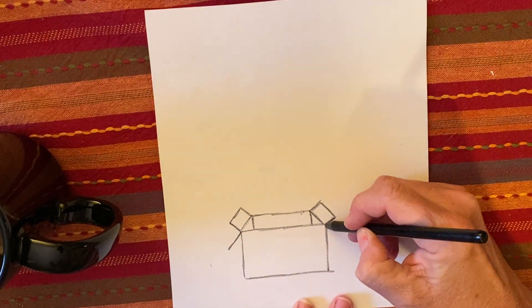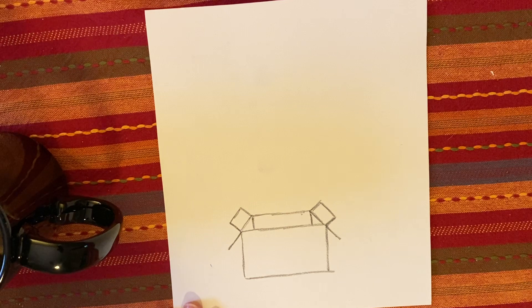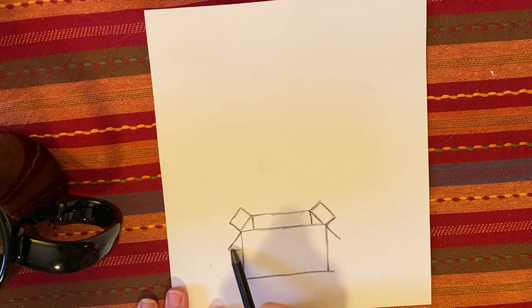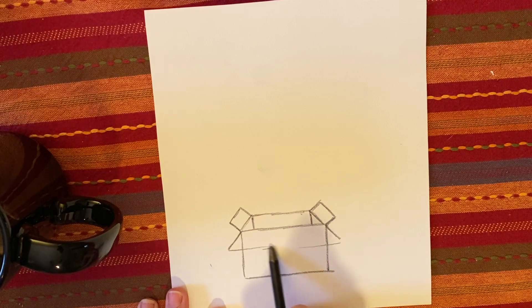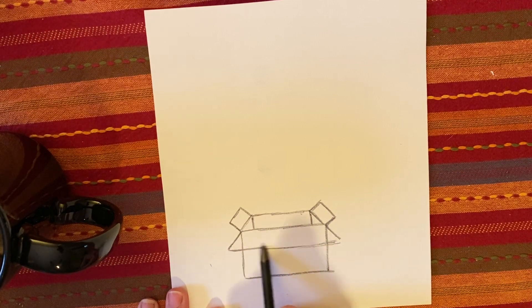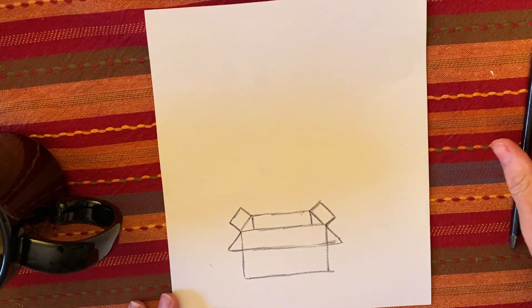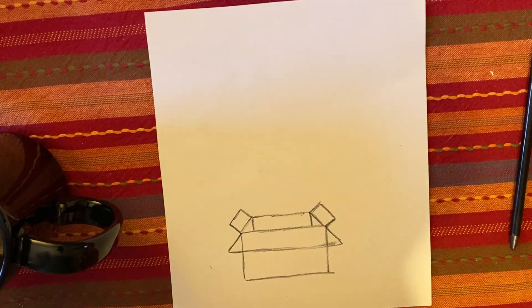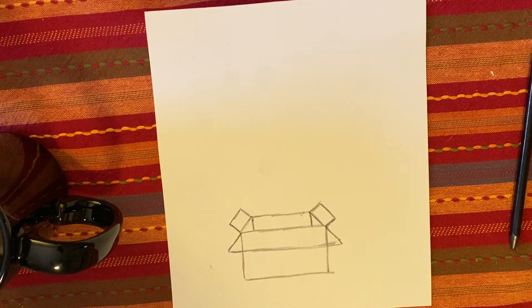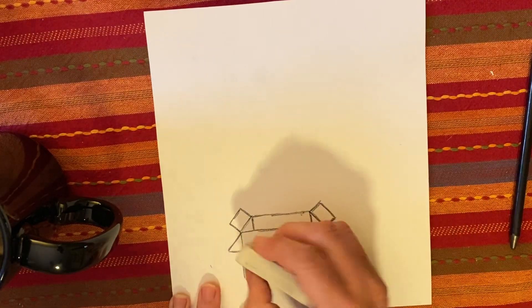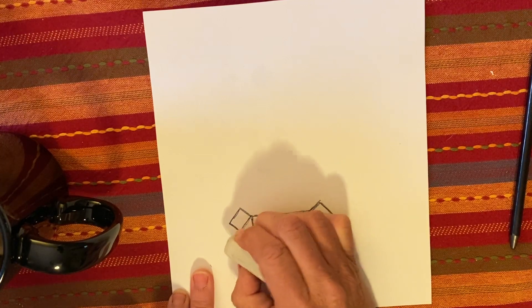We're going to draw a line diagonal here and diagonal here and then we are going to draw straight across. And then we are going to need to erase these two lines right here.